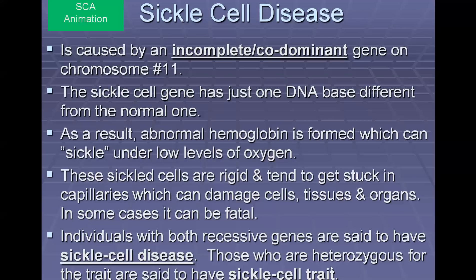Sickle cell disease is caused by an incomplete dominant or codominant gene on chromosome number 11. The sickle cell gene is just one DNA-base difference — an A has been changed into a T — and that results in a single amino acid being changed in the proteins for hemoglobin. Hemoglobin is what carries oxygen in the blood cells, and having that single protein changed makes it very difficult for your blood cells to carry the oxygen they need, particularly when oxygen levels are low.